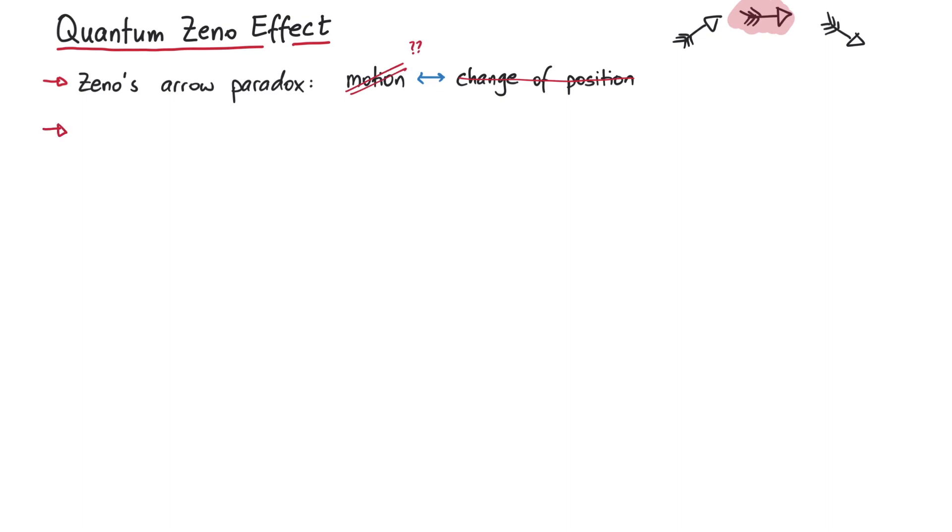The quantum version of the story goes like this. Consider a quantum system in the state psi. At t equals zero, we perform a measurement with sum operator a, which yields the eigenvalue lambda. After such a measurement, the wave function collapses to the corresponding eigenvector of a, which we call psi lambda.